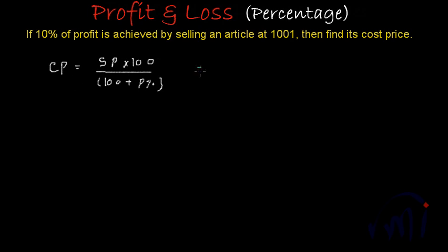So from here the cost price will be equal to sale price which is 1001 multiplied by 100, and the profit earned over here is 10% so this will be 100 plus 10. Or this can be written as 1001 multiplied by 100 divided by 110. So this 0 will cancel this 0, 11 ones are 11.